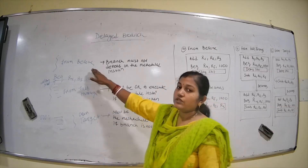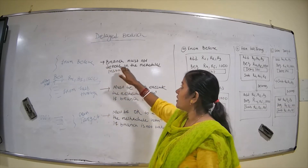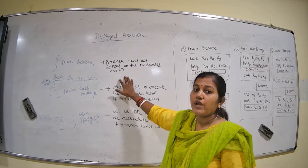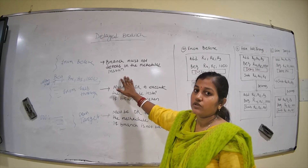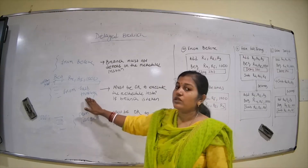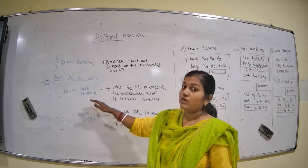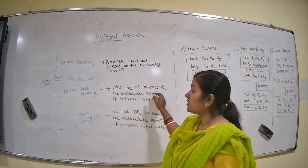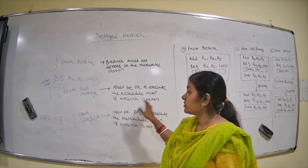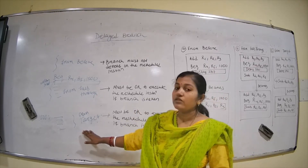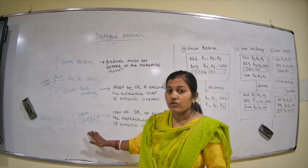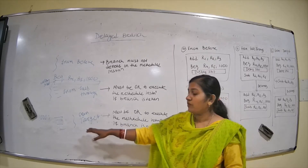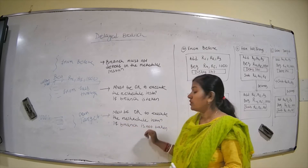When taking the instruction from before the branch, the branch instruction must not depend on the rescheduled instruction. If we are taking the instruction from fall-through, it must be okay to execute that rescheduled instruction if the branch is taken. If we are taking the instruction from the target, it must be okay to execute the rescheduled instruction if the branch is not taken.